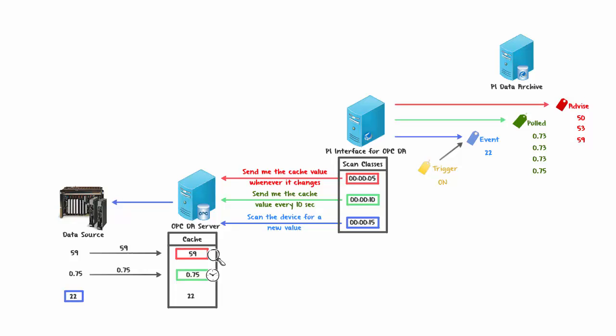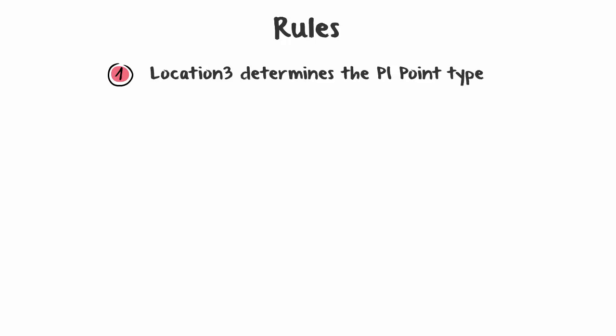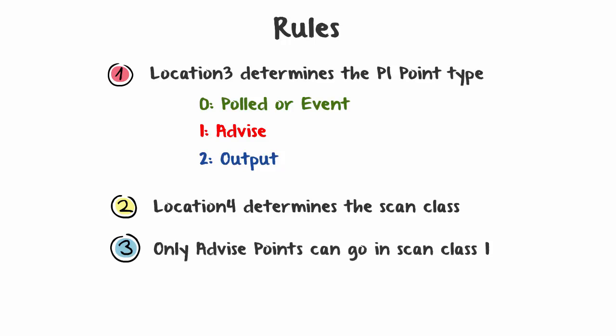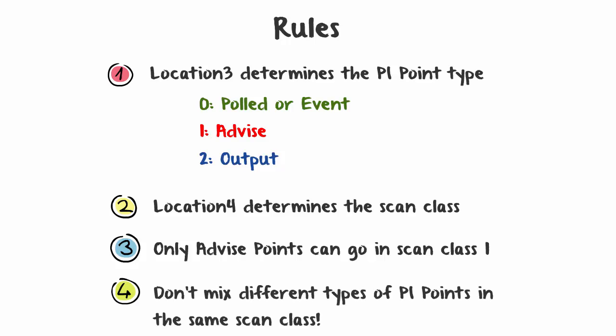Now let's look at some configuration rules. The Location 3 parameter of your PI Point determines the PI Point type: a value of 0 means a Polled or Event Point, 1 means an Advise Point, and 2 means an Output Point. Location 4 determines the Scan Class of your PI Point. Only Advise Points can go into Scan Class 1, as it's reserved for Advise Points. Finally, never mix different types of PI Points in the same Scan Class — for example, don't mix Polled and Advise Points — because these Scan Classes are OPC Server groups and the PI Interface won't know what kind of request to make.